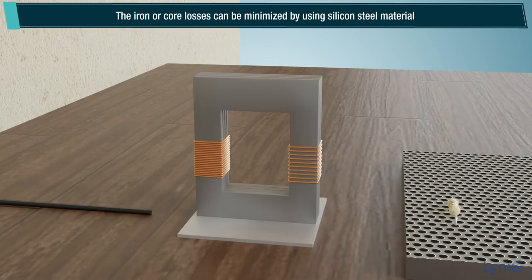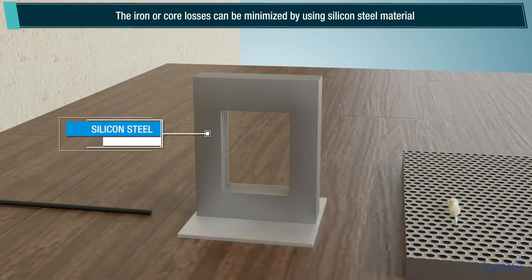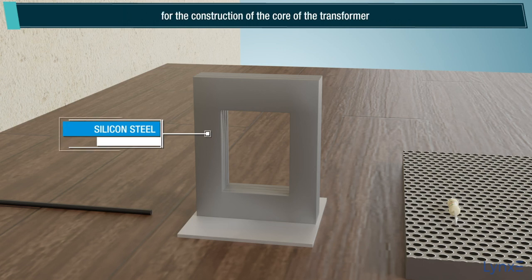The iron or core losses can be minimized by using silicon steel material for the construction of the core of the transformer.